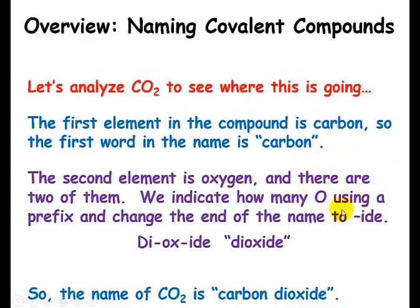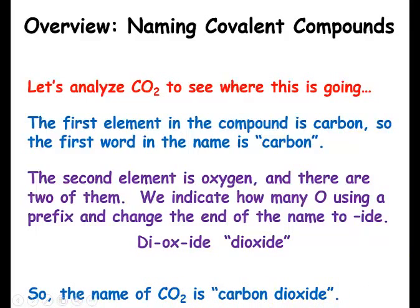We also hack off the ending of the element name, take the root — so 'ox' — and add '-ide', giving us 'oxide'. There are two of them, so we add 'di', giving us 'dioxide'. So when we say carbon dioxide, we're telling people there is one carbon and two oxygens in this covalent compound.